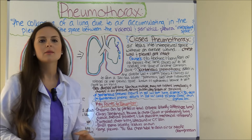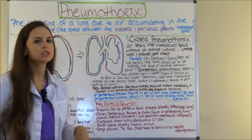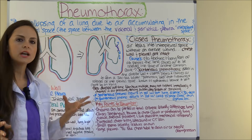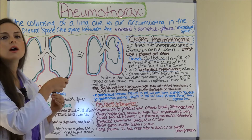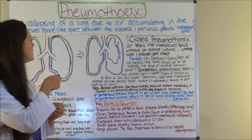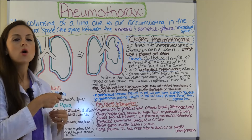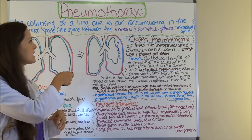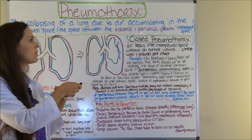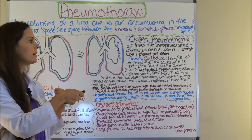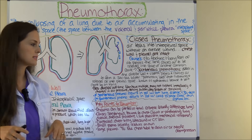First, let's talk about what is a pneumothorax — what is the definition? In a nutshell, it is the collapsing of a lung due to air accumulating in the pleural space, which is the space between the visceral and the parietal pleura, also called the intrapleural space.